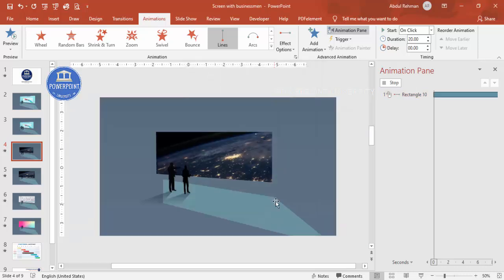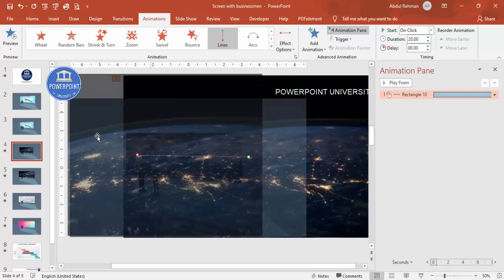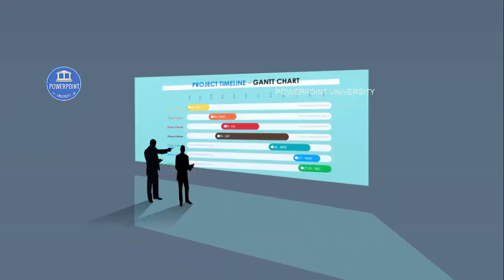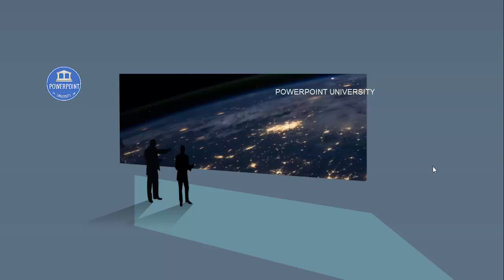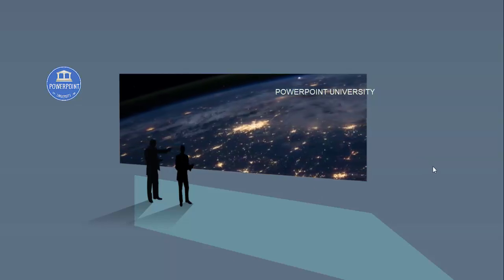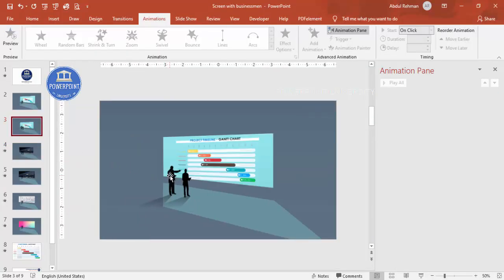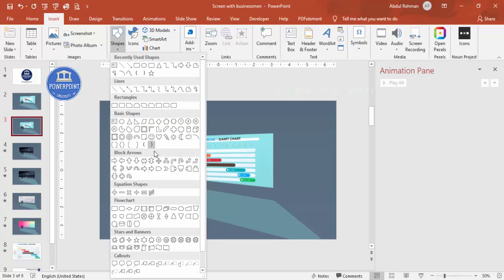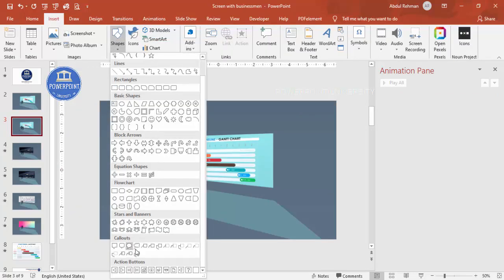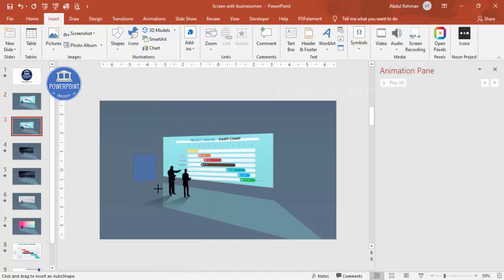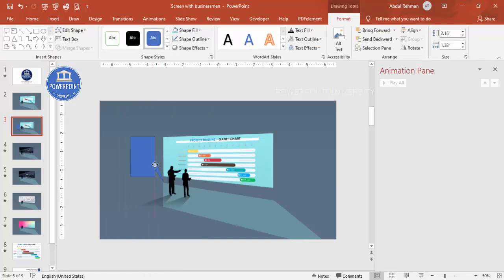Now I have two slides: one with a still image and one with a moving image. Depending on your requirement you can add text — go to Insert Shapes and add callouts, for example to show the person is saying something. You can add any text of your choice. This completes the tutorial for creating the concept slide with businessmen and an animated screen.